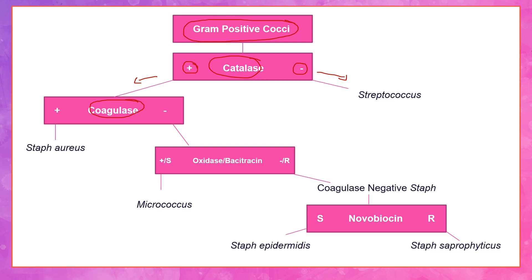I'm planning on doing another video on the coagulase test as well. If the coagulase test is positive, it's a staph aureus bacteria. If the coagulase test is negative, we continue on the flowchart and perform an oxidase and a bacitracin test. This is where oxidase comes into play for this particular example.